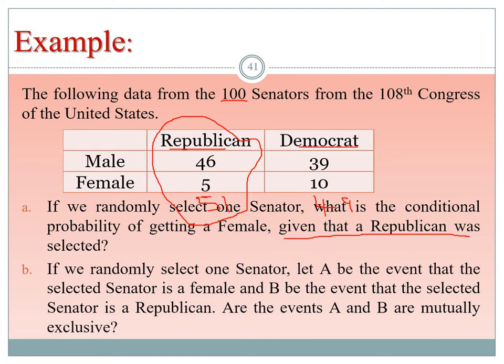For the same senator example, are events A (selected senator is female) and B (selected senator is Republican) mutually exclusive? To check, we calculate P(A ∩ B). Since there are 5 Republican females, P(A ∩ B) is not zero, so the events are not mutually exclusive.